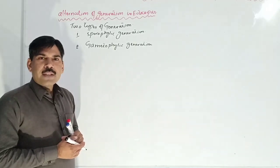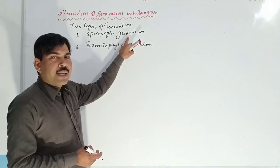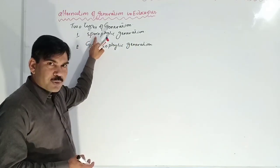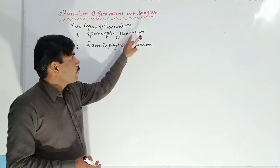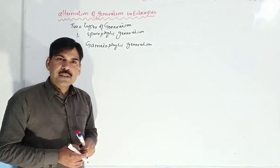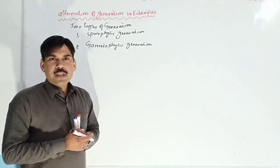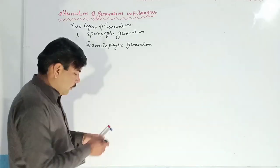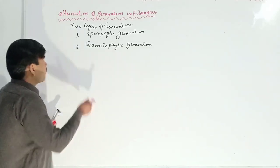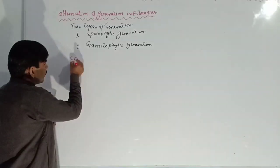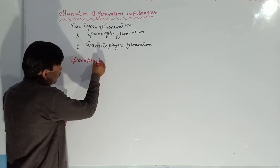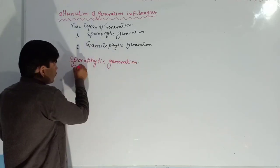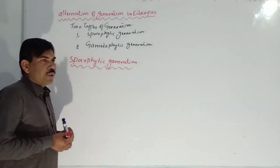How do they alternate with each other? The sporophyte generation gives rise to the gametophytic generation, and the gametophyte again gives rise to the sporophytic generation, then the sporophyte gives rise to the gametophyte again. That is why both generations always alternate with each other — this is known as alternation of generation.